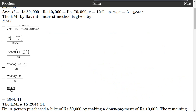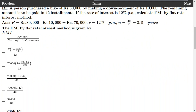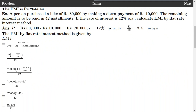Let us see another example from the flat rate interest method. It is of similar type and is to be solved in a similar way. A person purchased a bike of Rs. 80,000 by making a down payment of Rs. 10,000. The remaining amount is to be paid in 42 installments. If the rate of interest is 12% per annum, calculate EMI by flat rate interest method.